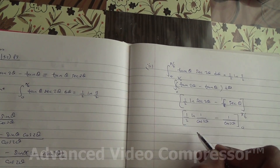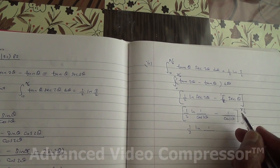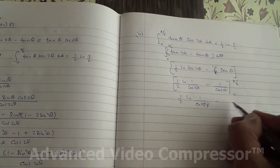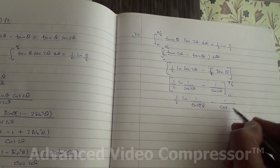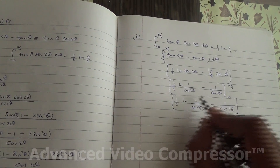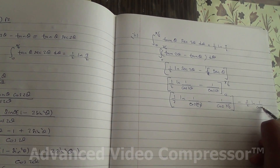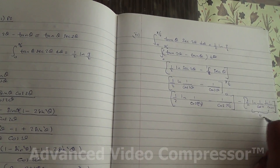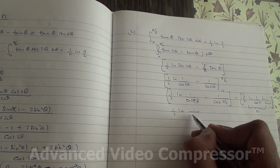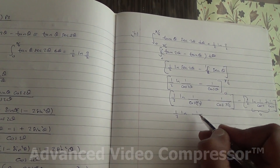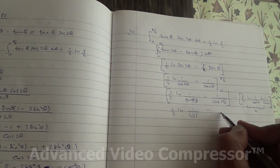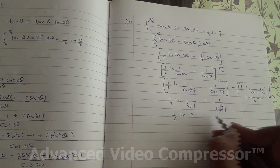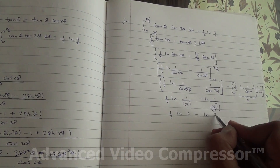Evaluating at π/6: cos(π/6) and 2 times π/6 is π/3, so cos(π/3). At the upper limit we get 1/cos(π/3) minus 1/cos(π/6). At the lower limit (θ = 0) everything is zero. So we have ½ ln(2) minus ln(2/√3).